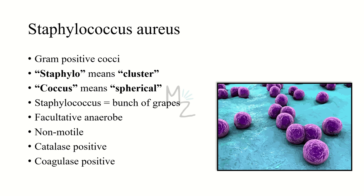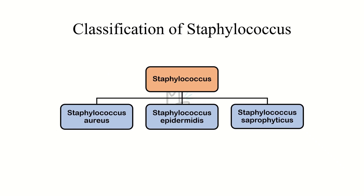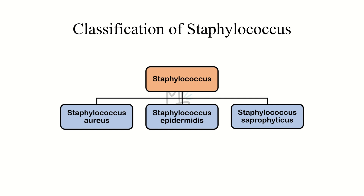It is a non-motile bacterium because it has no motility apparatus like a flagella. It is catalase positive. All three Staphylococcus species are catalase positive, but Staphylococcus aureus is the only one that is coagulase positive — this is the test that differentiates S. aureus from the other two species. The three species are: Staphylococcus aureus (most common), Staphylococcus epidermidis, and Staphylococcus saprophyticus.